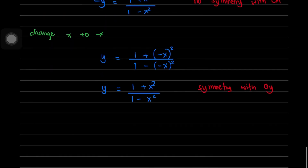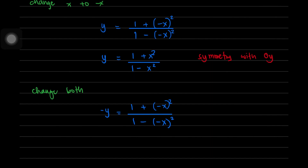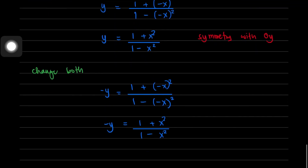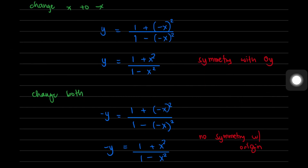Changing both x and y to negative x and negative y simultaneously gives negative y = (1 + x²)/(1 - x²). Comparing to the original, there is a change in value, so there is no symmetry with respect to the origin. The graph is only symmetrical with respect to the y-axis.